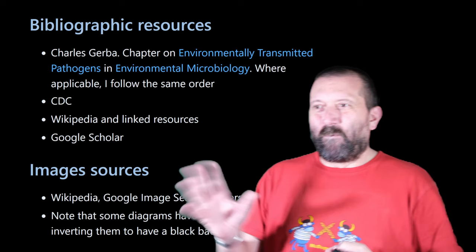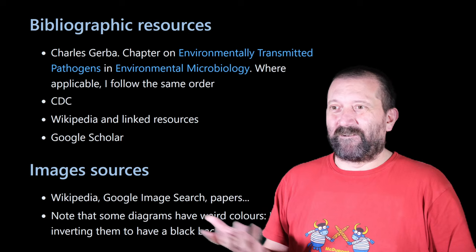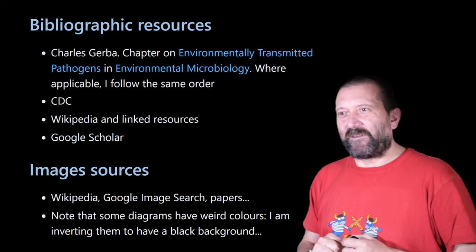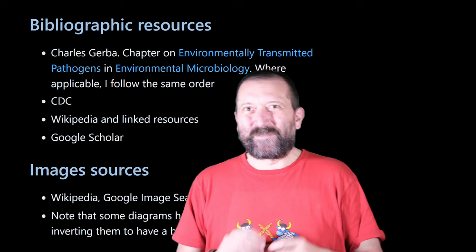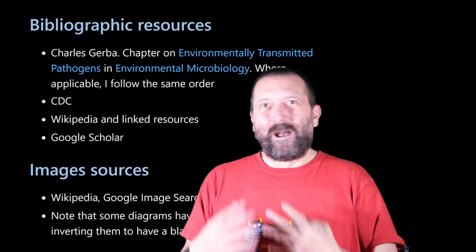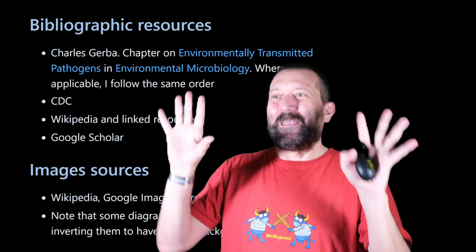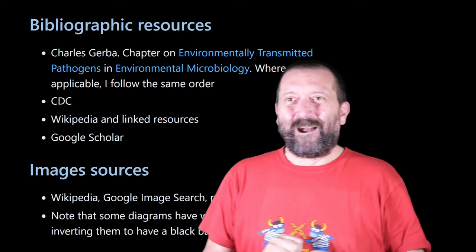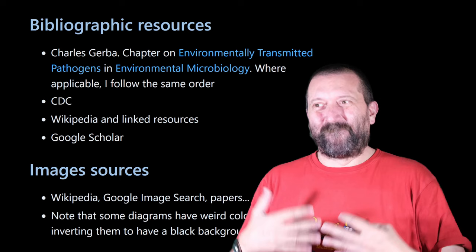I have a lot of figures in this presentation — they come from Wikipedia, Google Image Search, papers, etc. One thing I want to point out is that you will see sometimes weird colors in my diagrams. That is because I wanted to make things fit within the black theme I'm using for the slides, so I've used a little tool that allows inverting the colors. If you want to look at the proper diagrams without weird colors, you might want to look at the source for the slides.